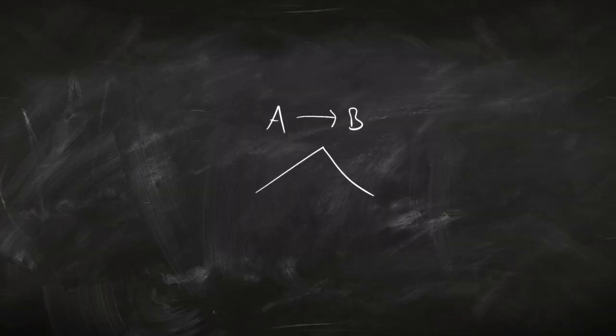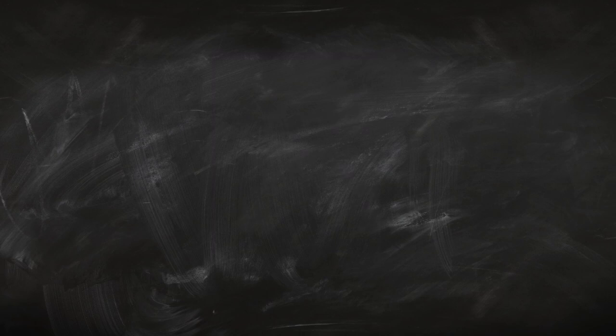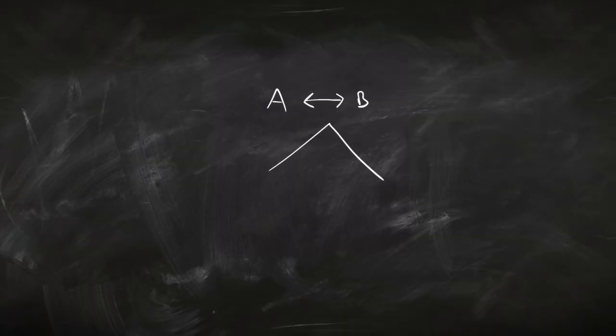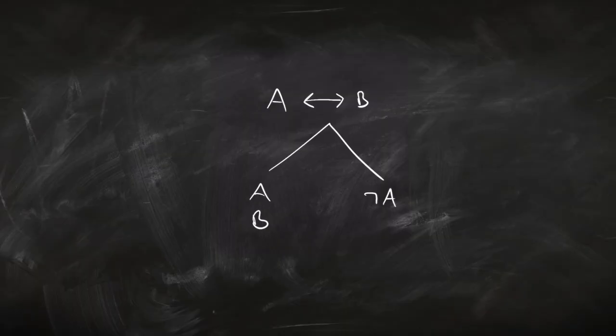For if-then, the rule is: if-then kind of means either A is false or B is true, in classical logic at least. So you branch — you have not-A on the left and B on the right. For if and only if, that means either they're both true or they're both false. So you branch again: on the left you have A and B, and on the right you have not-A and not-B.